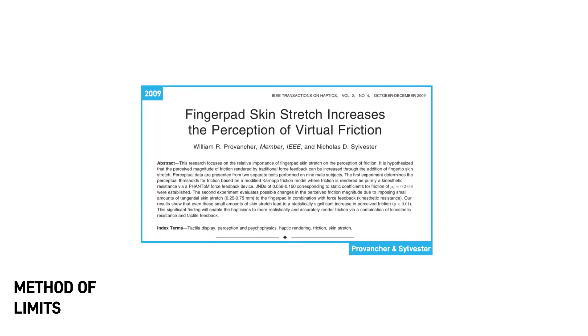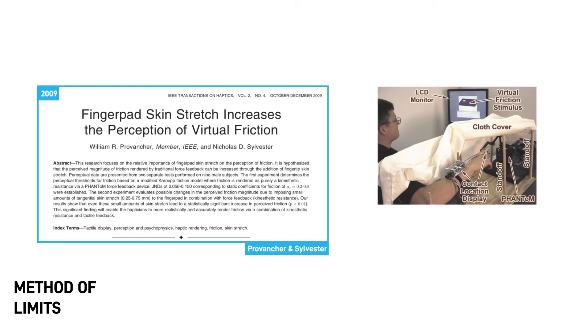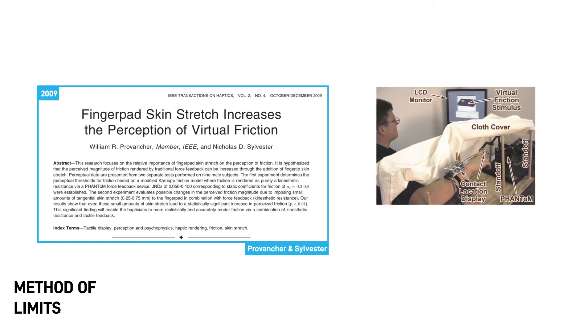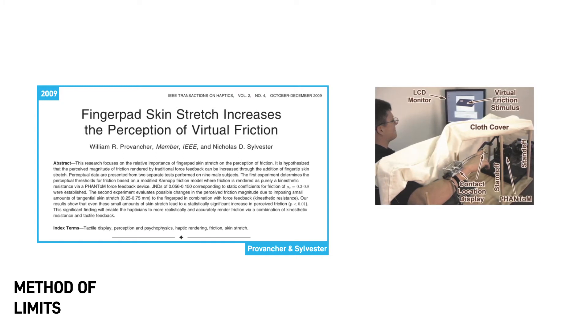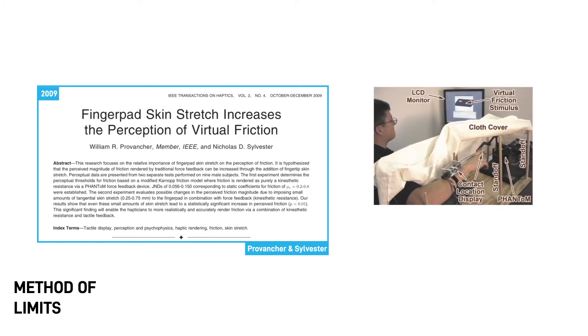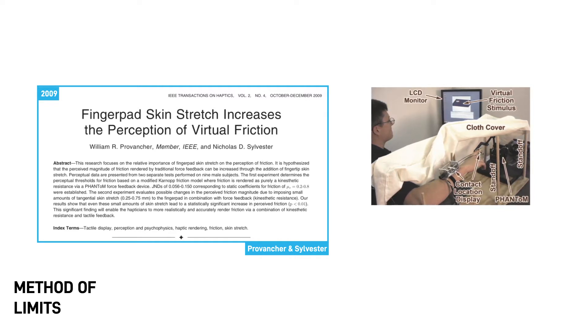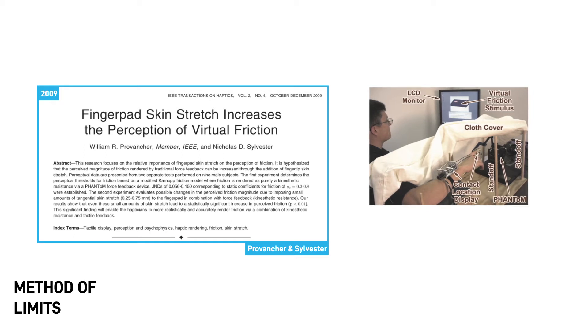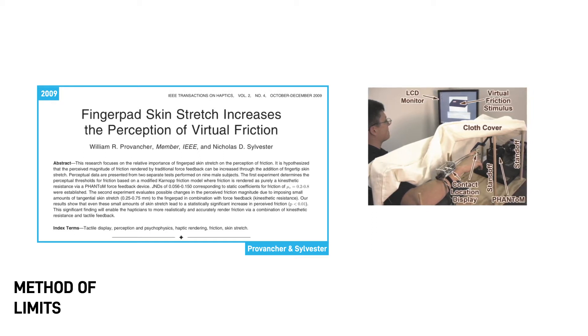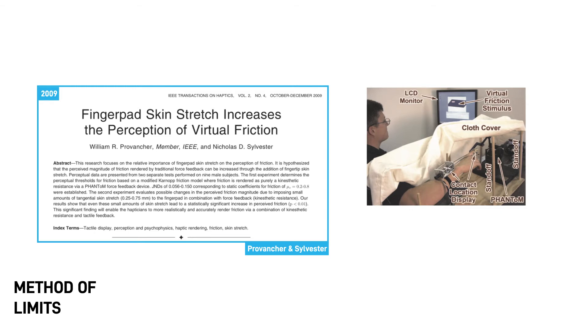For example, in this study, the experimenters used a custom experimental setup that coupled a phantom premium device to a custom-built wearable thimble to study human perception of frictional changes during haptic exploration. At first, they used a method of limits to compute rough JND estimates that were later used to calibrate comparison stimuli for the method of constant stimuli.